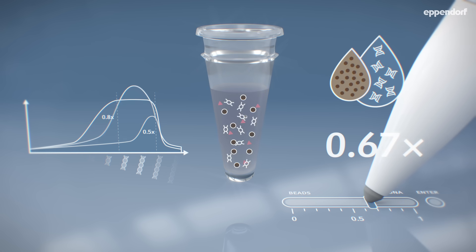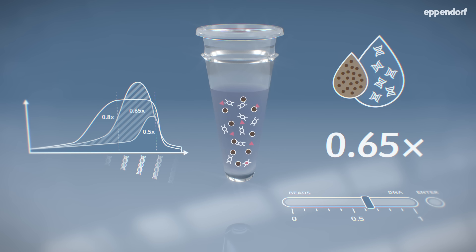The ratio of 0.65x gives a tighter size distribution, selecting fragment sizes needed for sequencing.